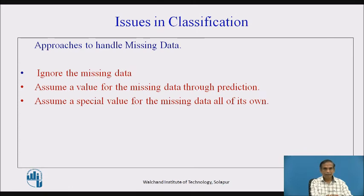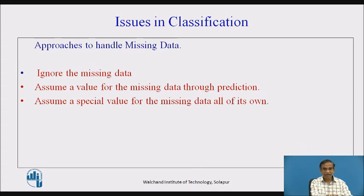Approaches to handle missing data include: ignoring the missing data totally throughout training and classification; assuming a value for the missing data through prediction from beginning to end; keeping the same assumed value throughout; or assigning a special dedicated value for missing data so it is consistently handled through the entire classification process.